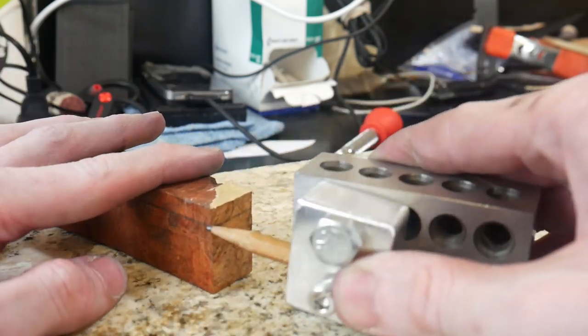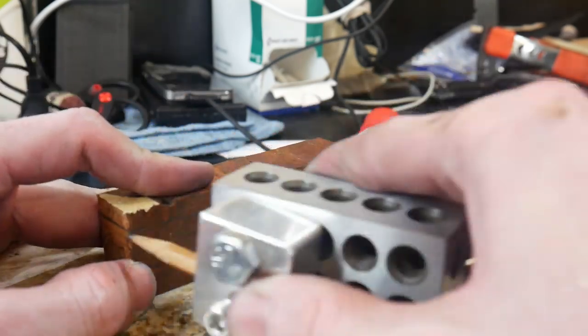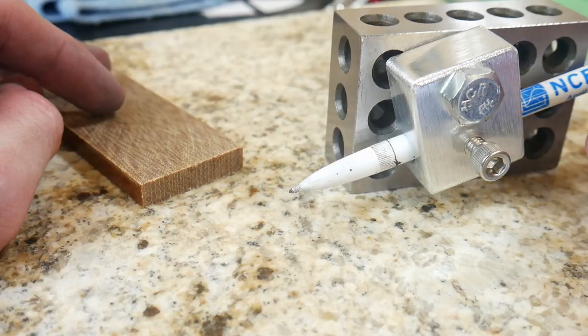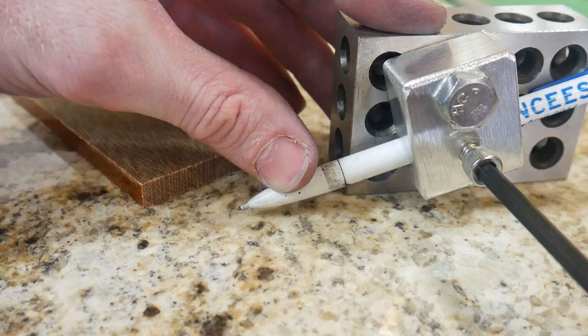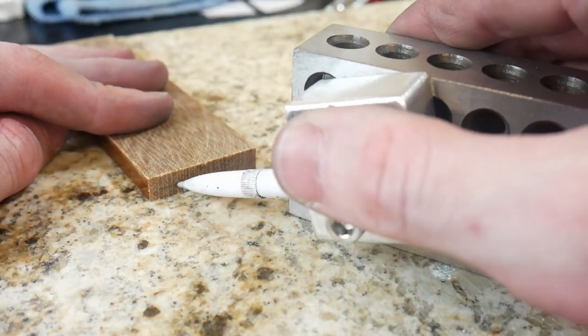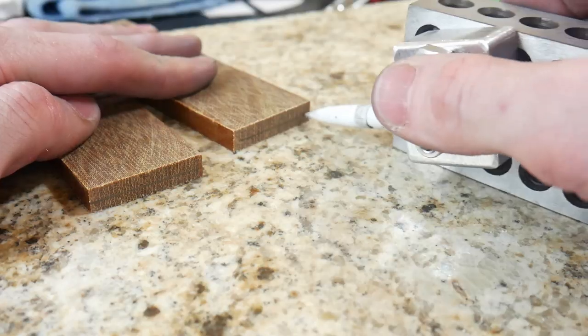Putting a pencil back in it, you can easily scribe out heights on pieces of wood, guards, or maybe even the front bevel of your handle scales on a full tang knife. This was an operation that I wasn't even thinking about when I built this scribe, and I think I'll actually use it a lot for this.